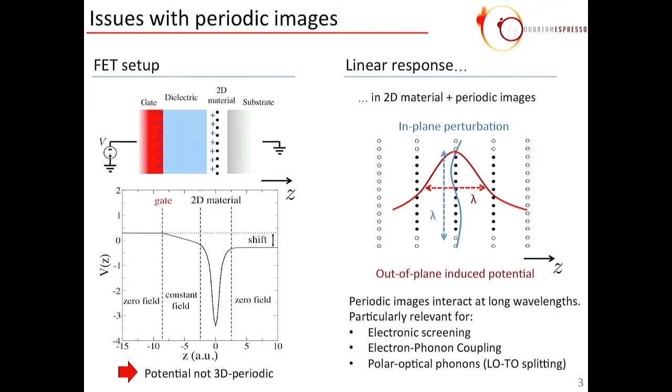Which means that there is a shift in the value of the potential as you cross the system from left to right here. And, of course, the potential doesn't have the same value on both sides of this box, and this potential does not comply with 3D periodic boundary conditions. So, this is the first problem.